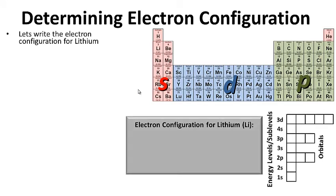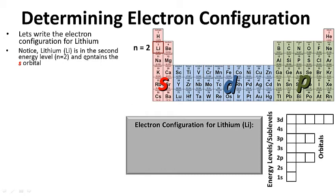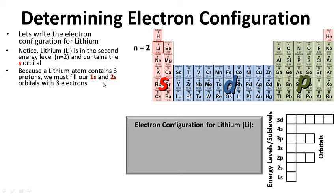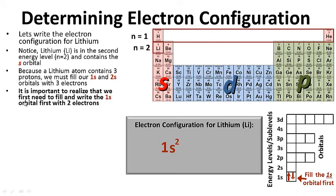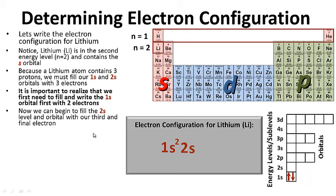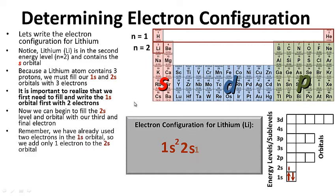Let's try one that's more difficult — lithium. Lithium is in the second energy level, N equals 2, and contains the S orbital. Because a lithium atom contains three protons, we must fill our 1s and 2s orbitals with three electrons. We first fill and write the 1s orbital with two electrons — we always fill lower energy levels first. Then we fill the 2s level with our third and final electron, giving 2s¹. So the electron configuration for lithium is 1s² 2s¹.